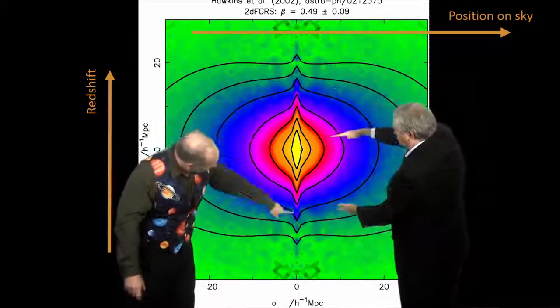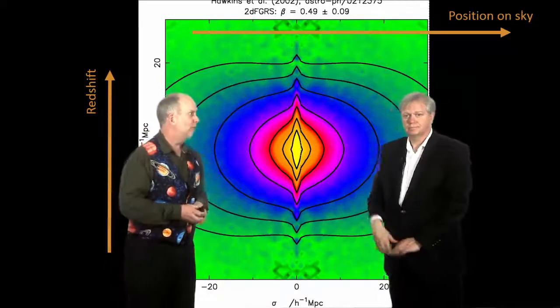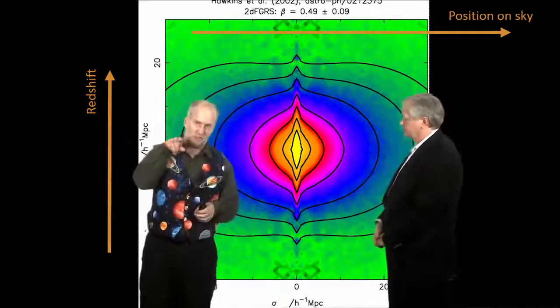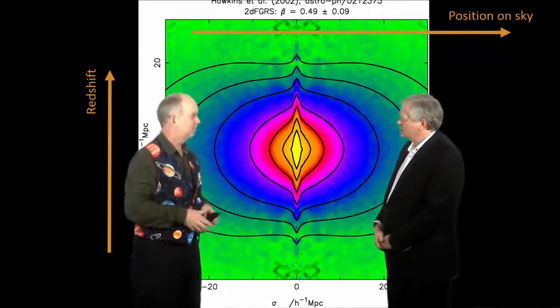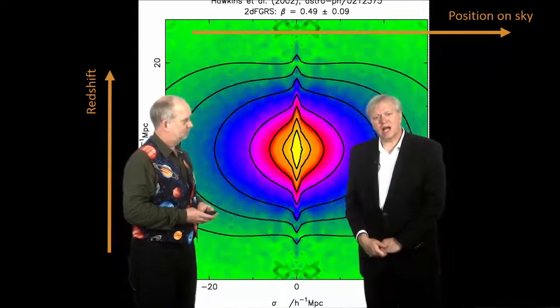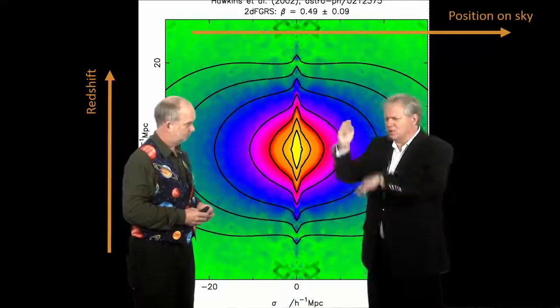What you actually see are two funny things. One thing you see is a sort of stripe along here. These are called fingers of God. You see them in all these redshift diagrams. It looks like there are fingers of galaxies pointing at the Earth. So, that's what you see when you actually look at a cluster like we showed you.